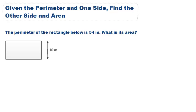Here we have two pieces of information. We know that the perimeter is equal to 54 meters and that one side, the width, is equal to 10 meters.